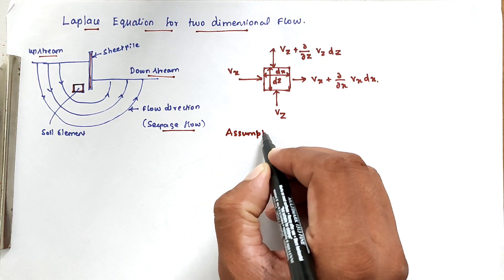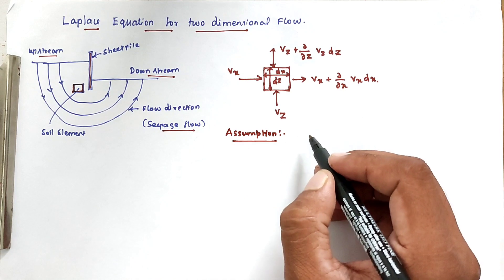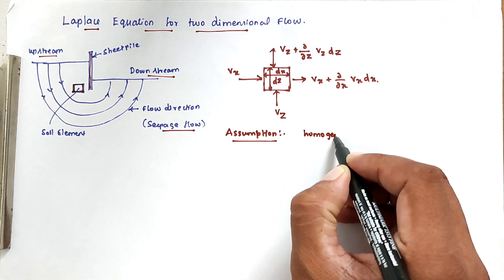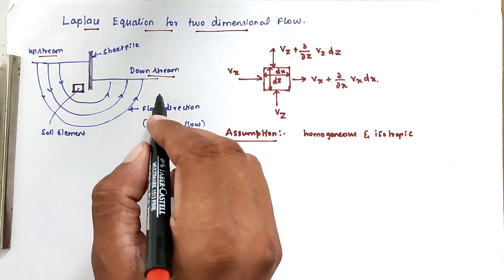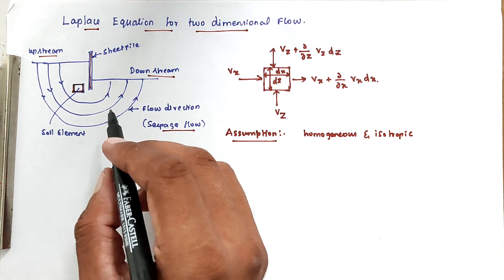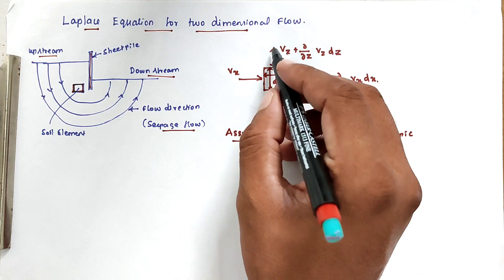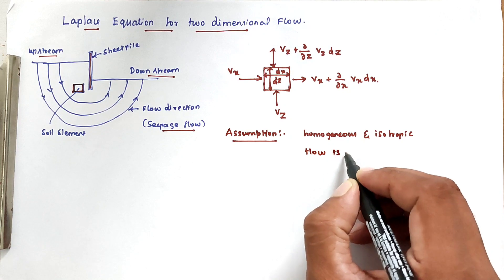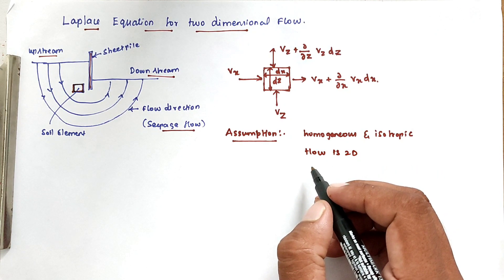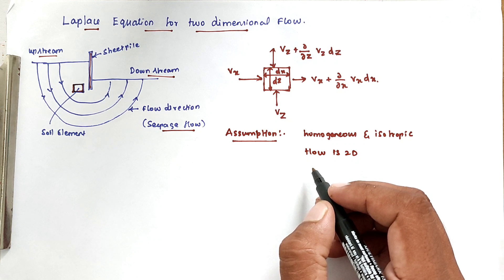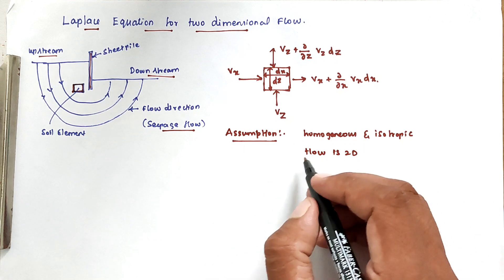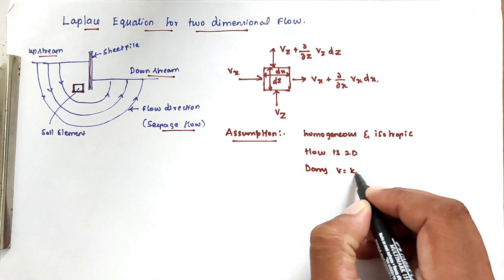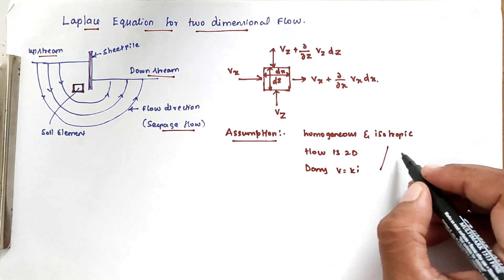The first assumption is that the soil mass is homogeneous and isotropic — the entire soil is both homogeneous and isotropic. The second assumption is that flow is two-dimensional, meaning only in the vertical and horizontal directions. Third, water and soil are incompressible. Fourth, the flow is steady and laminar. Fifth, the flow obeys Darcy's law: V = Ki.